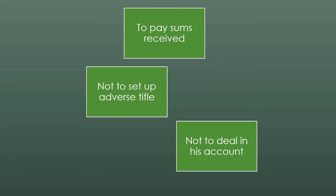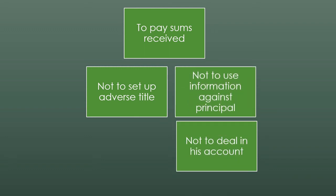The agent has a duty not to set up adverse title. For example, as part of a contract of agency, if certain goods are given to the agent, the agent should not pledge them, sell them, or create any kind of adverse title on them, because the goods belong to the principal. The agent should also not use information received during the contract of agency against the principal, either during the agency or after its termination. This is an ethical part of the contract.